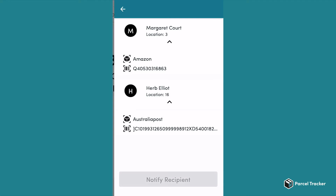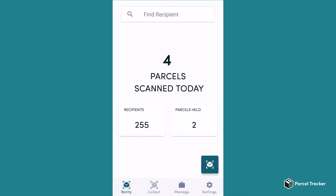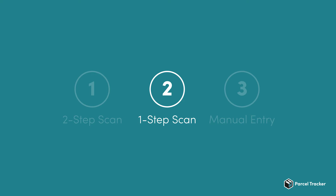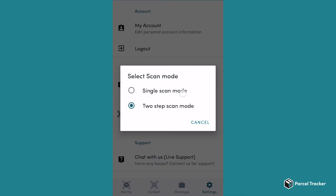They will now receive an email notifying them of their parcel's arrival. If you are feeling fancy, you can use the one-step scan mode. This procedure is exactly like previously described, except that you can run a single scan of both the name and the barcode. To enable the one-step scan mode, go to the settings and click on Select Scan Mode. Choose Single Scan Mode.